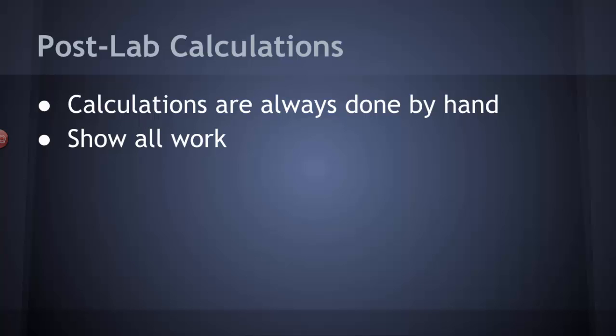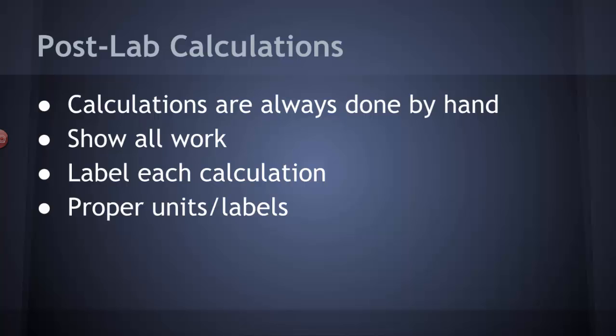You got to make sure that the calculation is labeled - it has a little title so that whoever's reading your lab will know what it is that you're calculating. And finally, make sure that you have proper units or labels on those calculations. You always want to do this stuff in pencil because if you make a mistake, it's very easy to erase. You don't have to cross anything out or scribble it out.